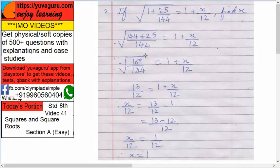Now 169 is a square of 13, so square root of 169 is 13. Square root of 144 is 12. So 13/12 equals to (1 + x)/12.